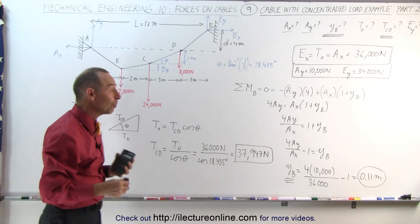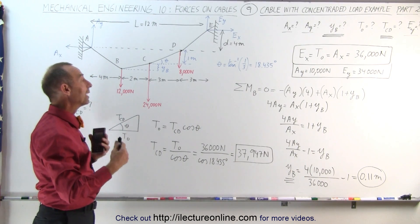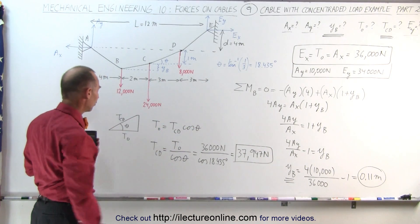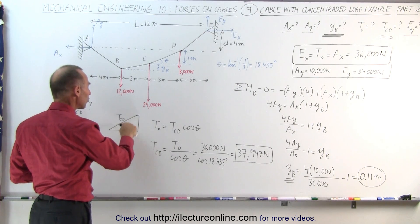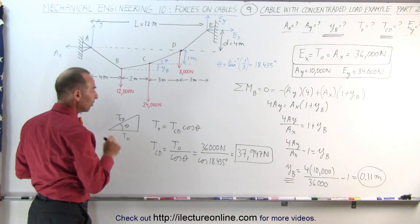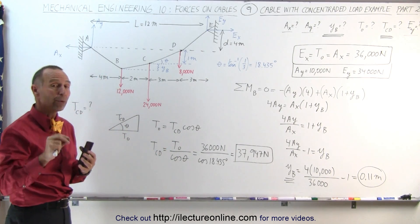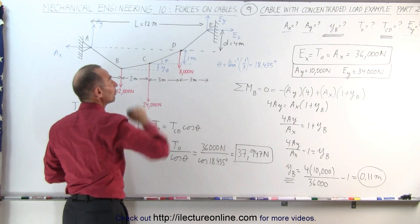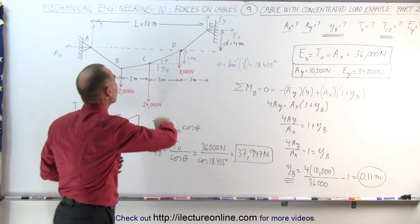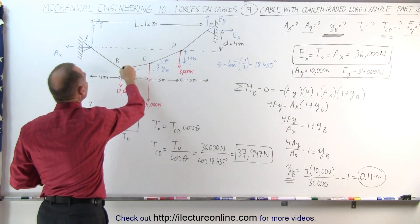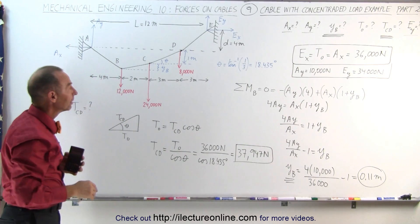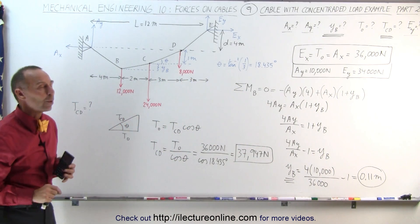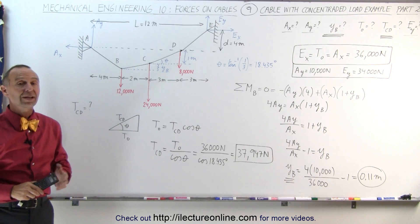With cables, the problems are actually not that hard because we can take the moment about any point on the cable considering only one section and ignoring everything else. By drawing force triangles, we find the tension in each section simply by taking T sub-naught divided by the cosine of the angle of that section relative to the horizontal. To find any height difference, we take the moment about any point of any section of the cable, disregarding the other section, and from that we can find any height differential between any of the points that carry these loads. And that's how it's done.